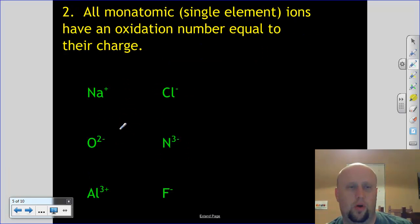Rule number two. All monatomic ions have an oxidation number equal to their charge. Now, what does that mean? Polyatomic meant many atoms. Monatomic, when we say mono, mono means one. So that means a single element ion.